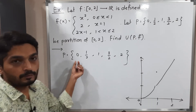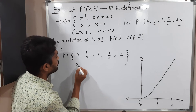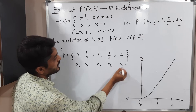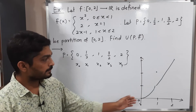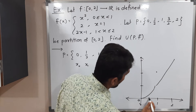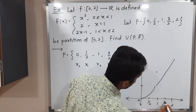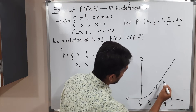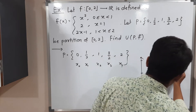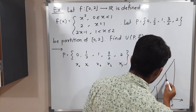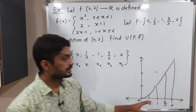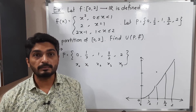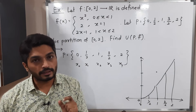Now consider the partition: {0, 1/2, 1, 3/2, 2}. We denote these as x₀, x₁, x₂, x₃, x₄. Because of this partition, the region is divided into four parts. We need to find the upper sum, so first let us calculate each Δxᵢ.